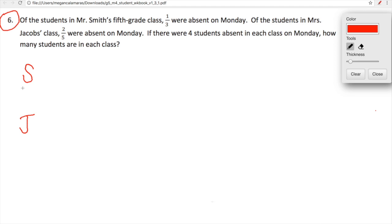Okay, so we have some information. Let's organize this information with a visual. So we have Smith, I'll put S, and we have Jacobs, we'll put a J. So each of these lucky 5th grade teachers have their own classes. We are going to represent that with a tape diagram. In Mr. Smith's 5th grade class, 1 third were absent. Of the students in Mrs. Jacobs's class, 2 fifths were absent. So we have 1, 2, 3, 4, 5, so 2 fifths were absent in Ms. Jacobs's class.